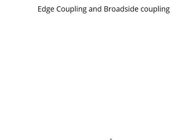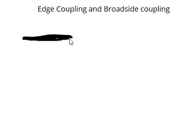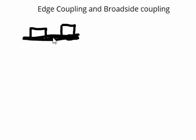In this video we will talk about edge coupling and broadside coupling in simplest terms. Let us assume we have a PCB of specific layers and let us take a top layer. In this top layer, let us assume we have a trace of specific thickness, and then we have another trace running parallel to it. These two traces are separated by a specific distance d.